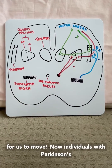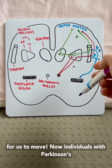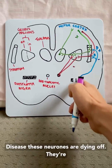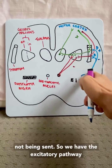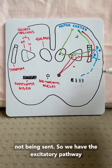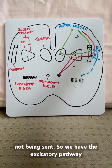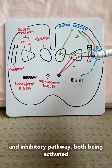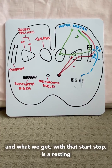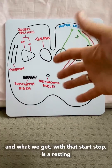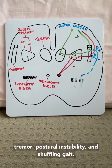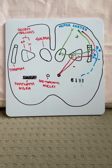Now individuals who have Parkinson's disease — these neurons are dying off. So we have the excitatory pathway and inhibitory pathway both being activated, and what we get with that start-stop is a resting tremor, postural instability, and shuffling gait.